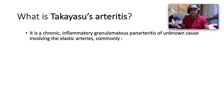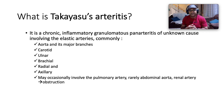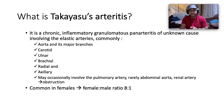Nobody really knows what causes Takayasu's, but what we do know is that it has a predilection for the elastic arteries — commonly the aorta and its major branches, the carotids, the ulnar arteries, the brachial artery, radial and axillary artery. It may on occasion involve the pulmonary artery and the abdominal aorta. When it involves the renal artery, the sequelae is obstruction. It's more common in females; in fact the female to male ratio is 80 to 1.